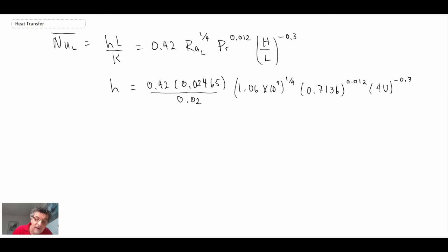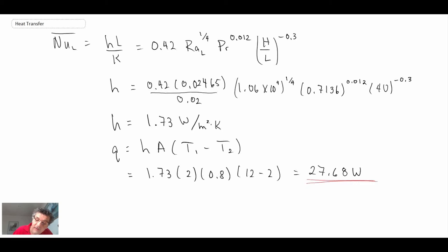So with that, what do we get? We get H is equal to 1.73 watts per meter squared kelvin. And Q, we wanted to find out the heat transfer coming through this. We use Newton's law of cooling. Temperature difference is the hot minus the cool. Plug in the values.